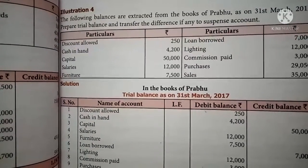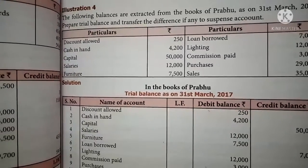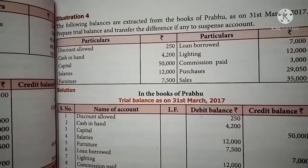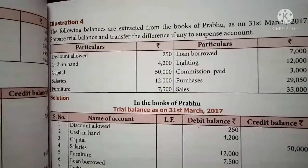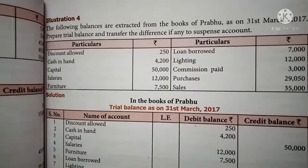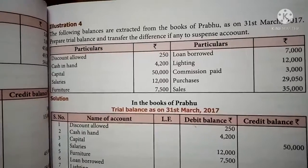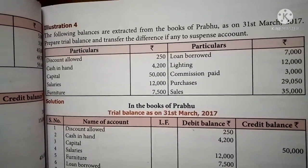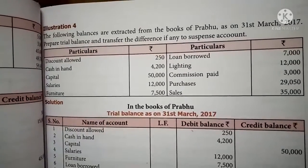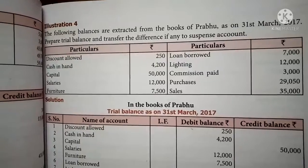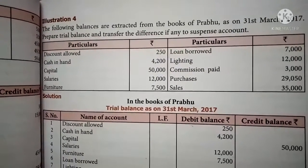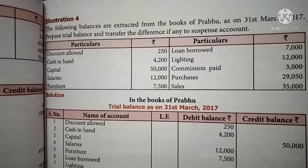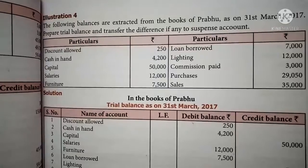Discount allowed is one of the expenses, so it should be shown in the debit column — 250. Cash is one of the assets, also shown in the debit column — 4,200. Capital 50,000 is a financial obligation, shown in the credit column. Salaries is an expense, debit column — 12,000. Furniture is property, debit column — 7,500. Loan borrowed is a liability, credit column — 7,000. Lighting is an expense, debit column — 12,000.